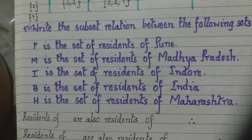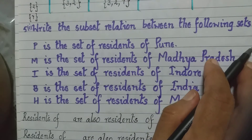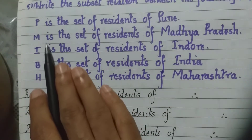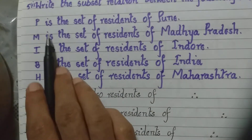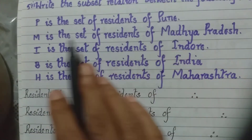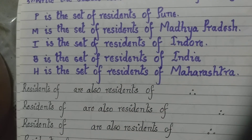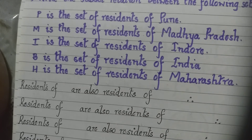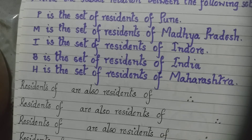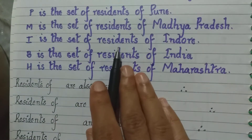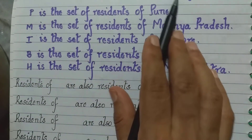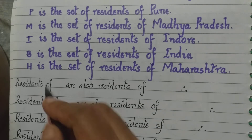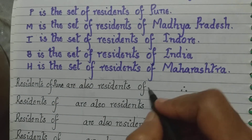Go to the 5th question now. Write the subset relation between the following sets. They have given us different names of sets for the residents of different places: P is the set of residents of Pune, M is the set of residents of Madhya Pradesh, I is the set of residents of Indore, B is the set of residents of India, and H is the set of residents of Maharashtra. Now residents of Pune will also be residents of Maharashtra.